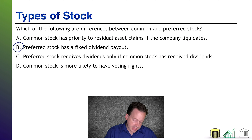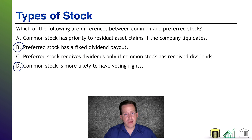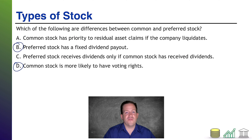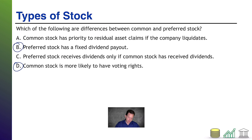Option D: common stock is more likely to have voting rights. Yes, that is true. Preferred stock could have voting rights, but more often than not, voting rights is something that you sacrifice for that kind of fixed dividend, debt-type arrangement that comes with preferred stock. So B and D are the correct answers to this one.